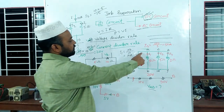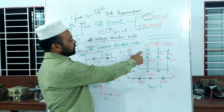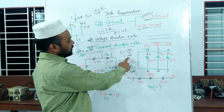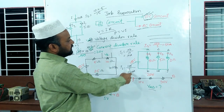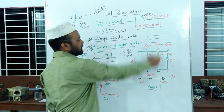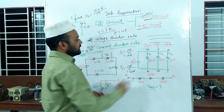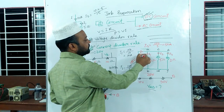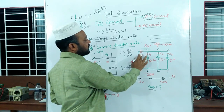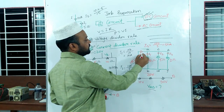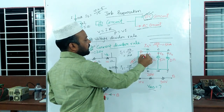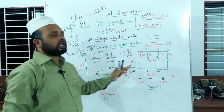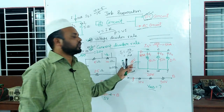So we have a total current. It is 10, 20, 30, and 80A. You get 80A. So we use this technique to calculate the values.